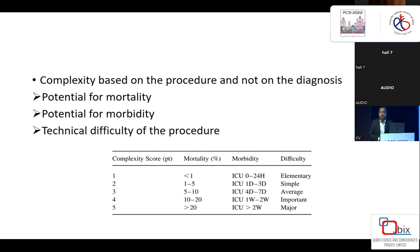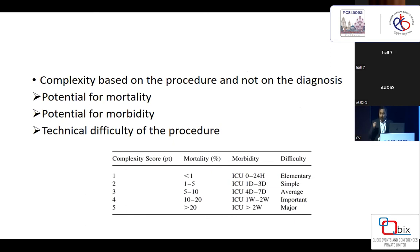They involved 23 countries and multiple surgeons, and looked into three factors for each procedure: the potential for mortality, the potential for morbidity, and the technical difficulty. They gave scores for each: if mortality is less than 1%, the score is 1; if mortality is more than 20%, the score is 5. Similarly, if the technical difficulty is elementary, it scores 1, and if it is major difficulty, it scores 5. Based on these, they assigned overall complexity scores.